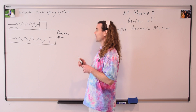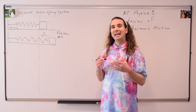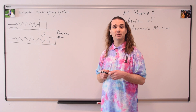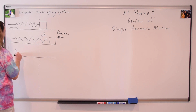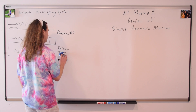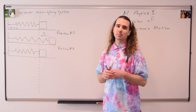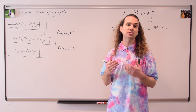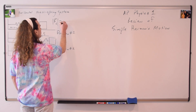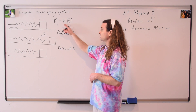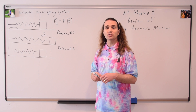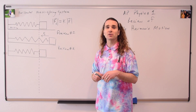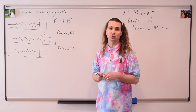Notice the force of the spring is to the left. And if we let go of the mass, it will slide to the left and go through the equilibrium position. Let's call this position number two. At this point, the displacement from equilibrium position is equal to zero. Therefore, the force of the spring, which is equal to the spring constant times the displacement from equilibrium position, is equal to zero at position number two.